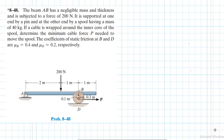Hello, I welcome you all. The problem reads: beam AB has a negligible mass and thickness and is subjected to a force of 200 newtons. It is supported at one end by a pin and at another end by a spool having a mass of 40 kg. If a cable is wrapped around the inner core of the spool, determine the minimum cable force P needed to move the spool. The coefficients of static friction at B and D are mu B equal to 0.4 and mu D equal to 0.2 respectively. This problem is from the Engineering Mechanics Statics textbook, 13th edition by R.C. Hibbeler.